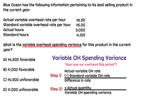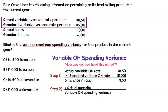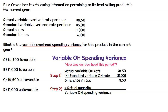In step one, all we're going to do is compare that actual to standard variable overhead rate. So $6.50 minus $5 — that means the actual variable overhead rate, which was the application rate for variable overhead, was $1.50 higher. Since the actual is higher than the standard or budgeted rate, that's not good for Blue Ocean in the current year. That means that they actually spent more, so that's going to be unfavorable.